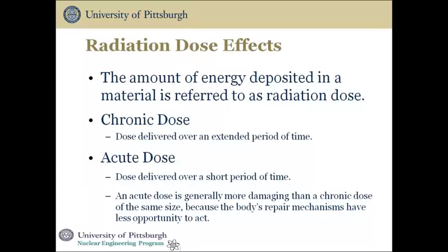There is a difference in radiation dose effects depending upon whether you get the dose delivered over an extended period of time or as a massive dose over a short period of time. We call the dose delivered over an extended period of time a chronic dose, while a dose delivered over a short period of time is an acute dose. An acute dose is generally more damaging than a chronic dose of the same size because the body's repair mechanisms have less opportunity to act.